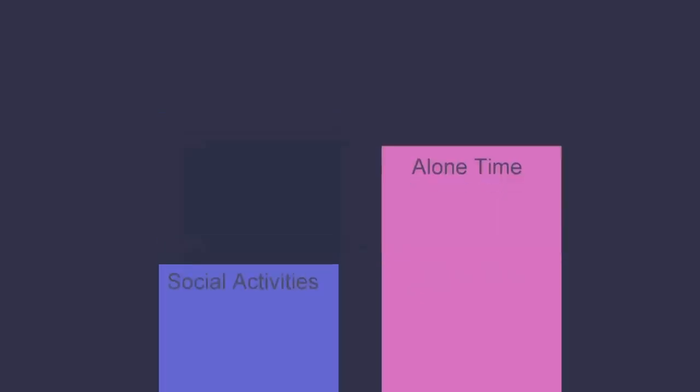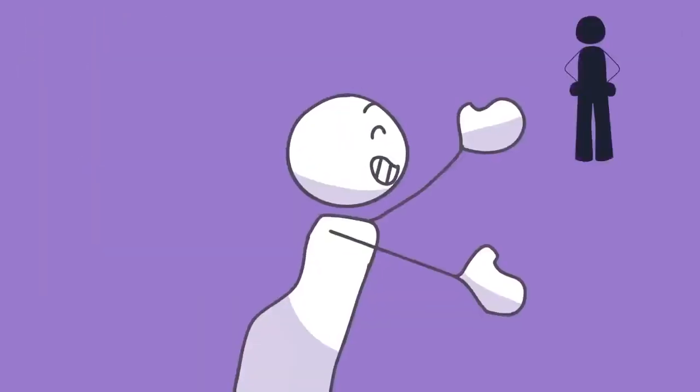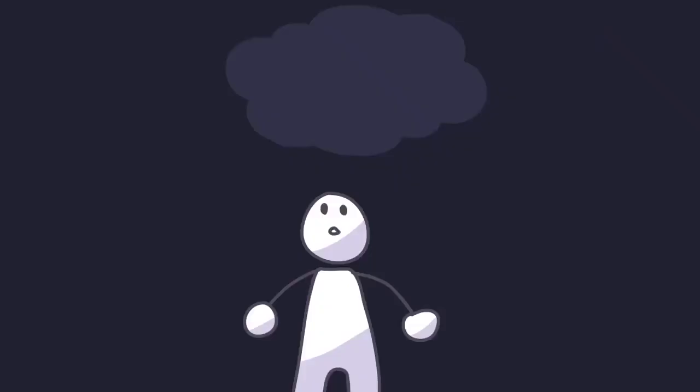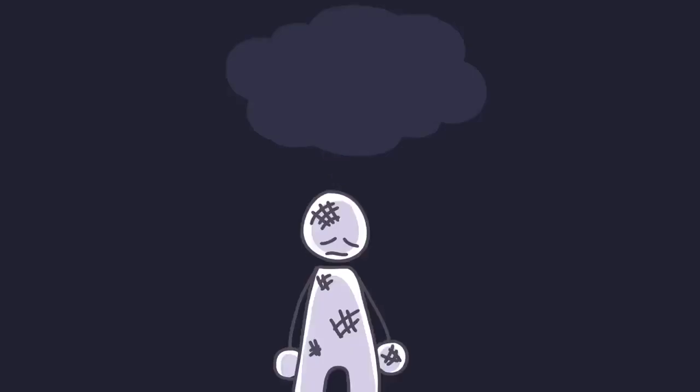How do I know if I am an introvert? You might be an introvert if: Number one, you need quiet to concentrate. Number two, you are reflective. Number three, you take time making decisions. Number four, you feel comfortable being alone. Number five, you don't like group work. Number six, you feel tired after being in a crowd.